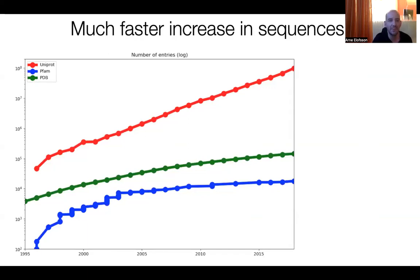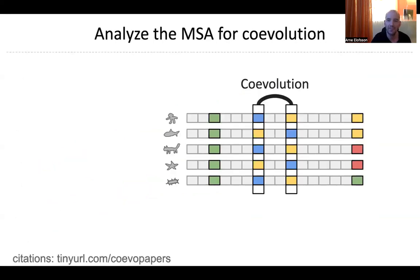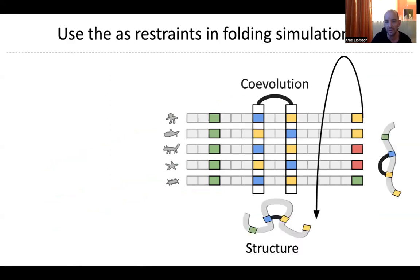However, the number of sequences is increasing much faster than the number of structures. That means for each protein structure we have, we have more and more sequence information. If you can use this information well, you should be able to improve predictions. Here is where co-evolutionary signals come in: positions that are co-evolving — alternating blue and yellow — are very likely in contact in the protein structure. If you can identify these co-evolving signals, you might use these predicted contacts to predict structure.